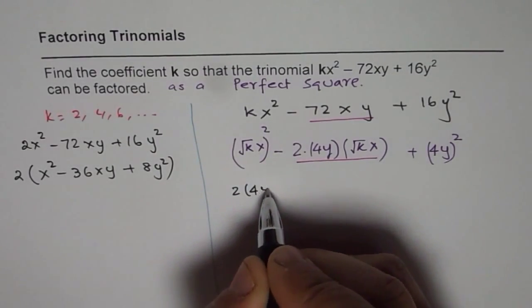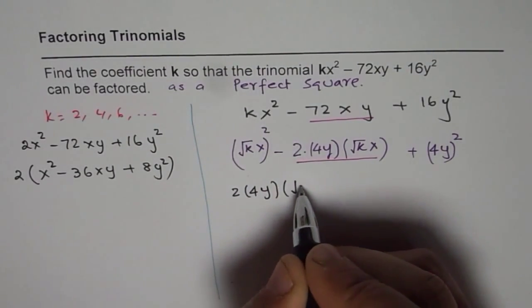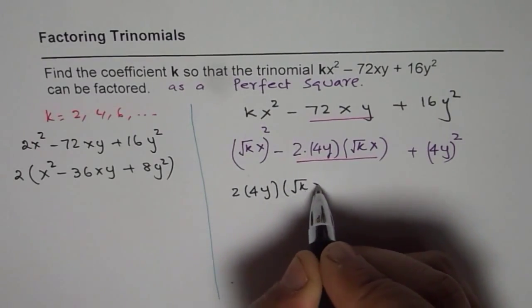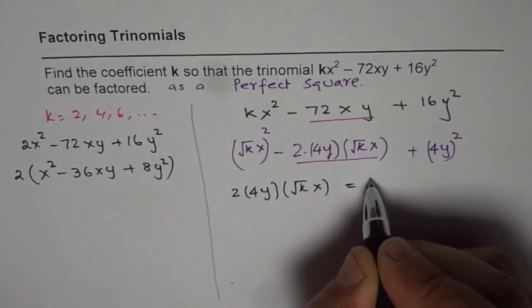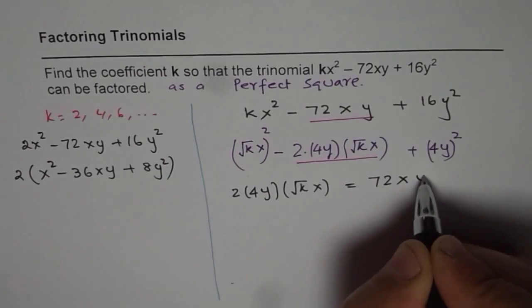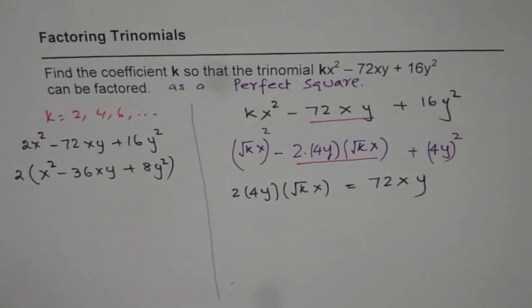4y times √(kx) should be equal to 72xy. I dropped minus from both.